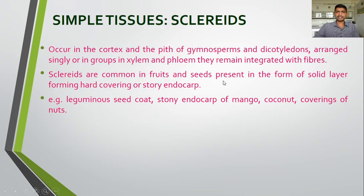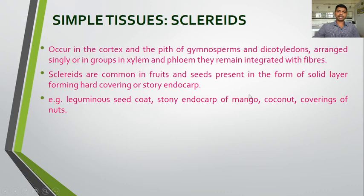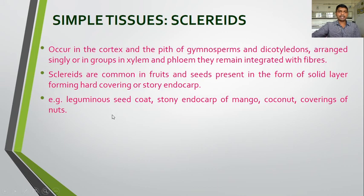Sclerides are common in fruits and seeds, present in the form of a solid layer forming hard covering or stony endocarp. Sclerides form the fruit covering — the pericarp, which is divided into epicarp, mesocarp, and endocarp. For example: leguminous seed coat, stony endocarp of mango, coconut, and coverings of nuts — all these are made up of sclerides.